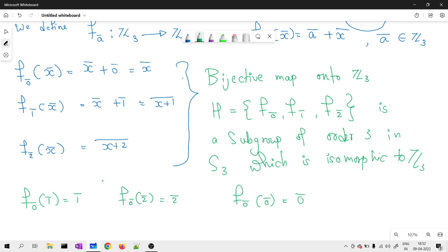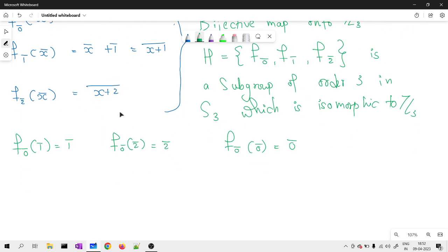So, if I want to write this in terms of permutation, how can I write? I can write F of 0̄ as (0̄, 1̄, 2̄) on top - that's nothing but the input. I write the output at the bottom. So, 0̄ goes to 0̄, 1̄ goes to 1̄, 2̄ goes to 2̄. Can you see? This is actually an identity.